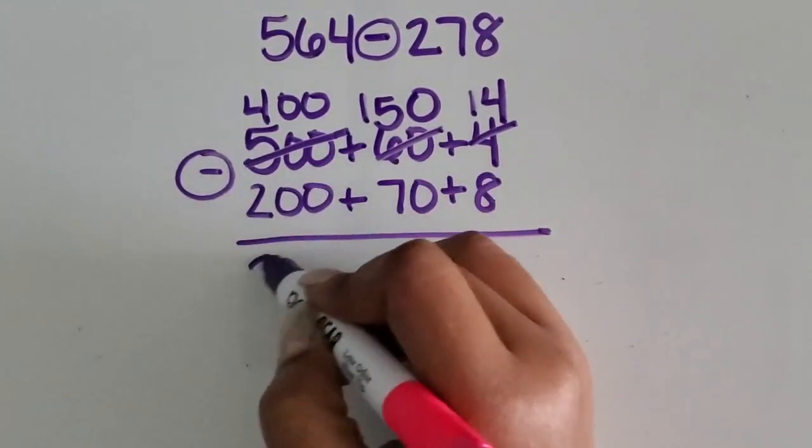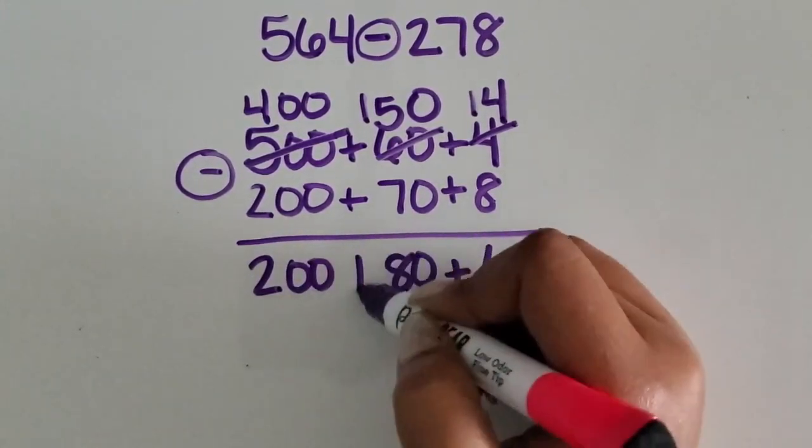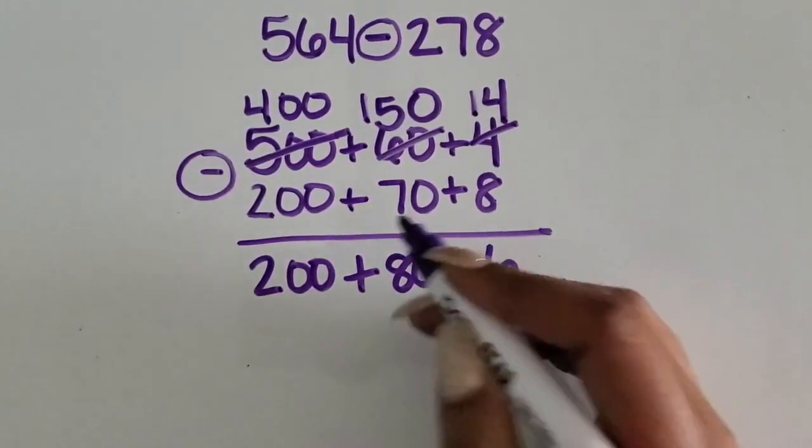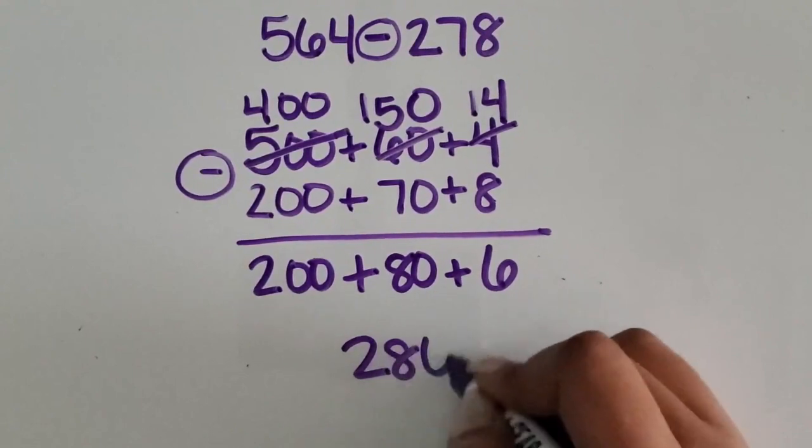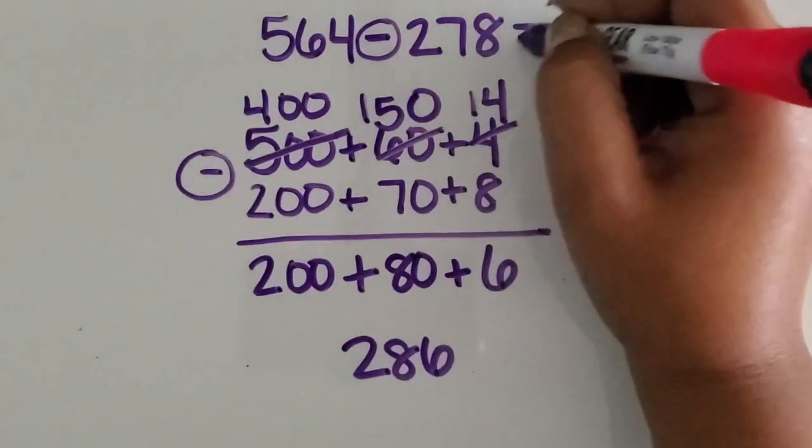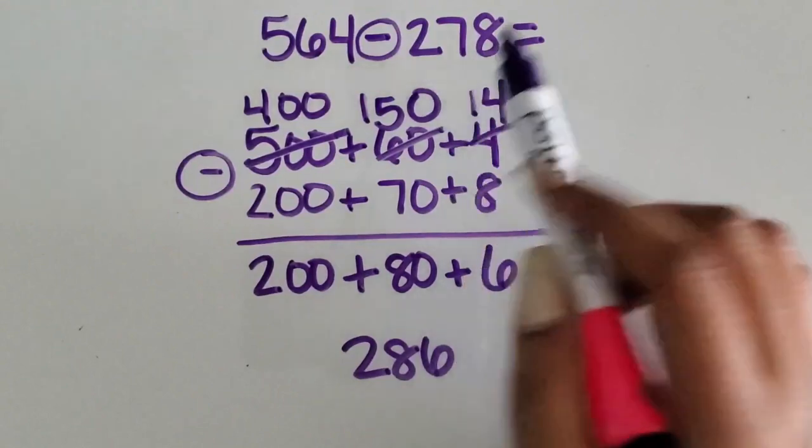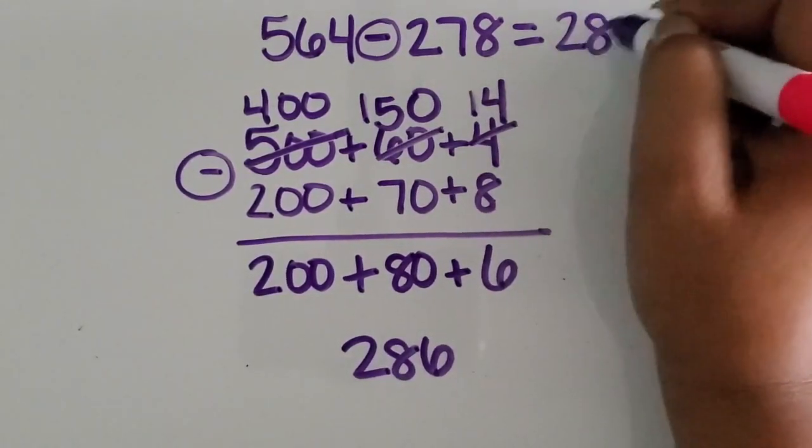400 minus 200 is 200. Okay, if we bring those back together, we get 286. The difference between 564 and 278 is 286.